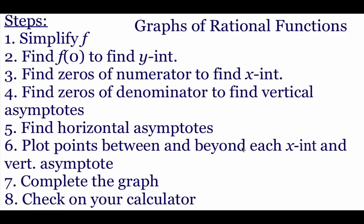In front of you right now is a big long list of things that we're going to do, and all of these steps are going to build us towards graphing out a rational function. Step one: simplify our function down as much as we can. Step two: plug in zero for our x value to find our y-intercepts. Step three: take the numerator of our rational function and set it equal to zero to find x-intercepts.